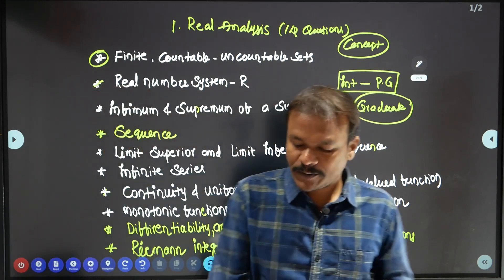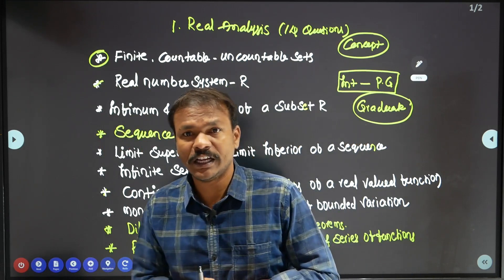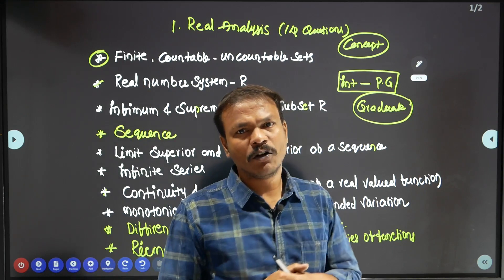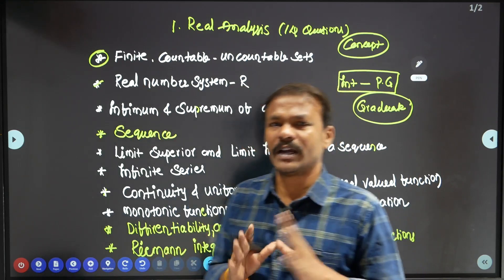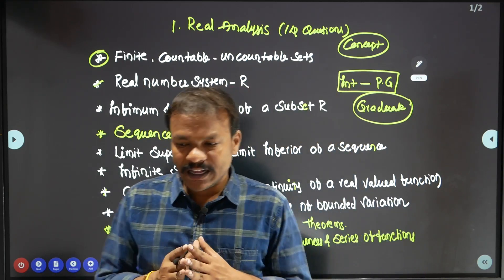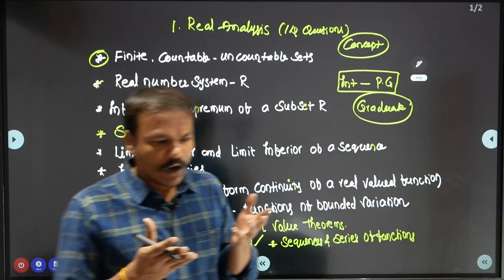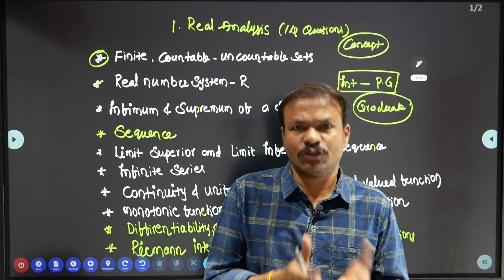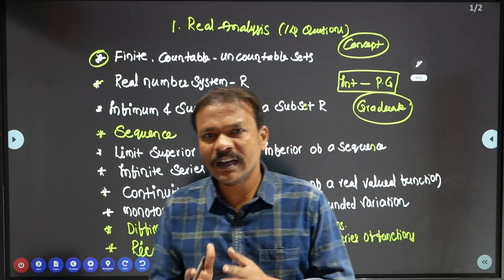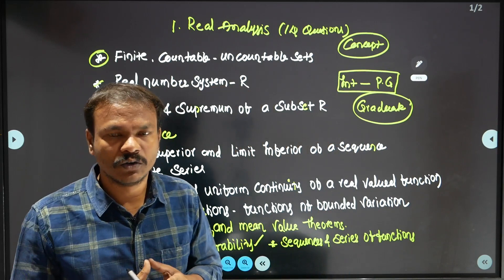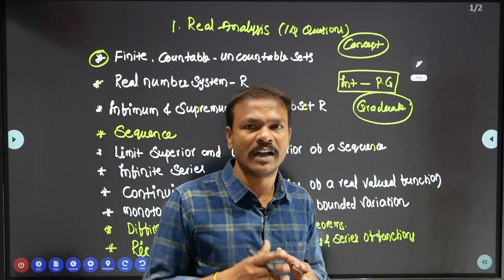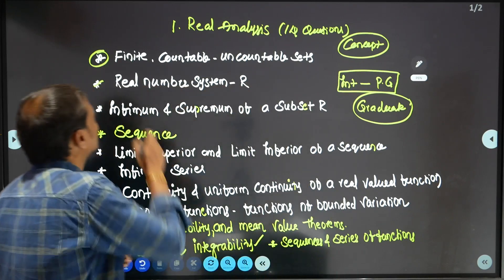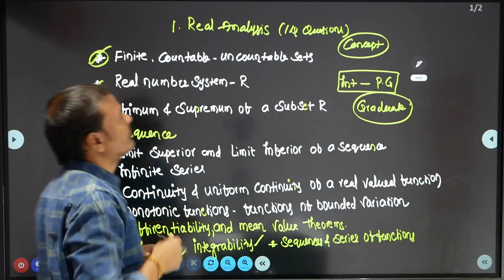The first important topic is countability of sets. The subsets of countable sets — countable, uncountable, infinite — the options may not appear simple, but at its core it is a very simple basic concept.